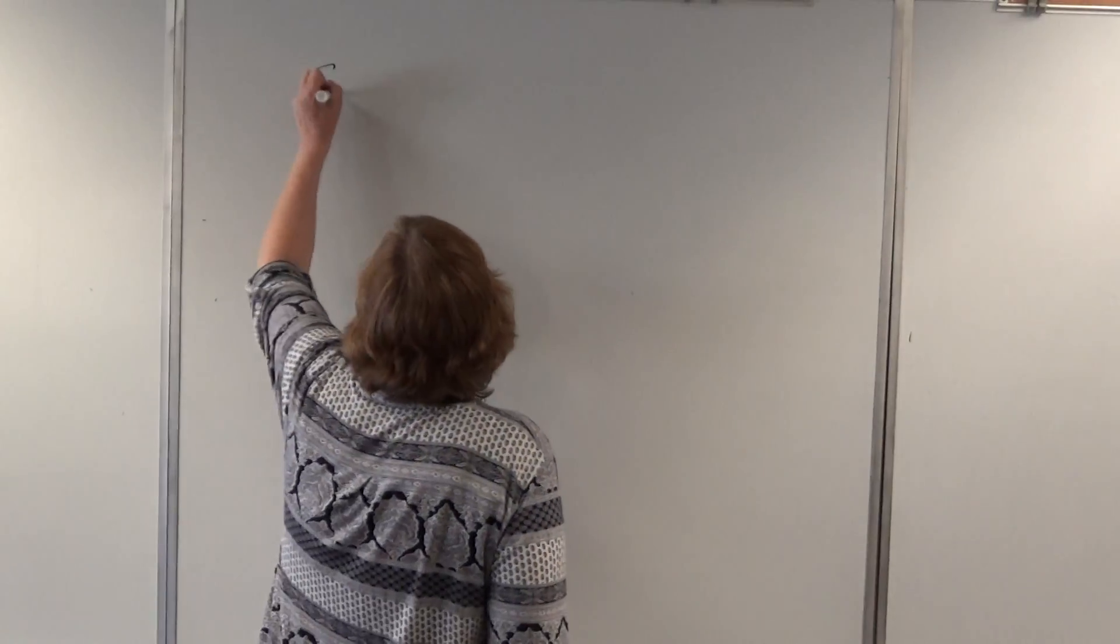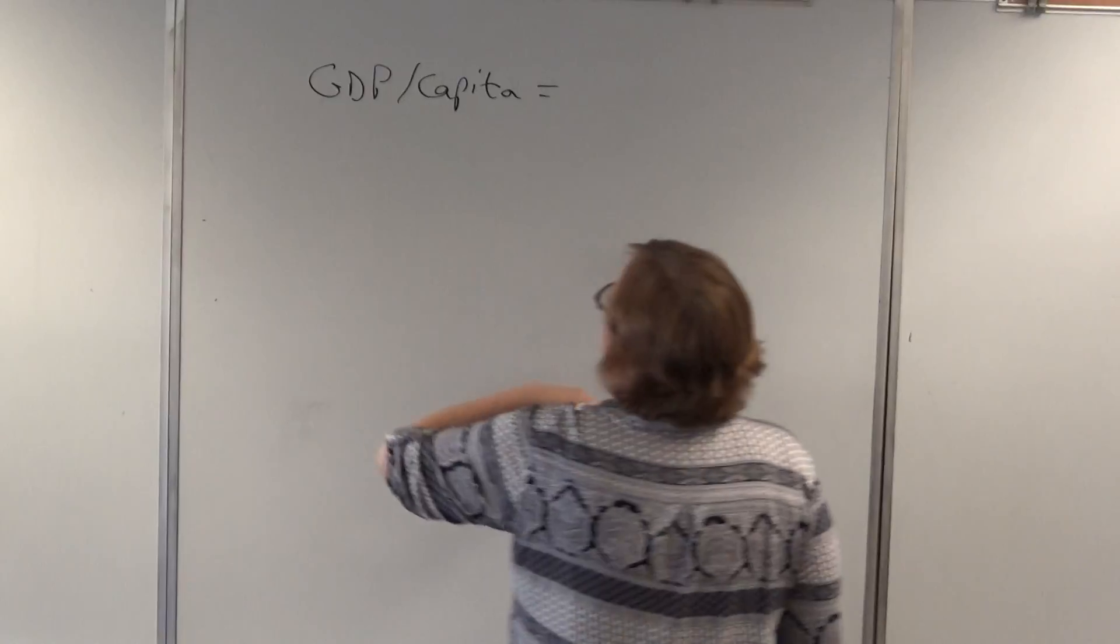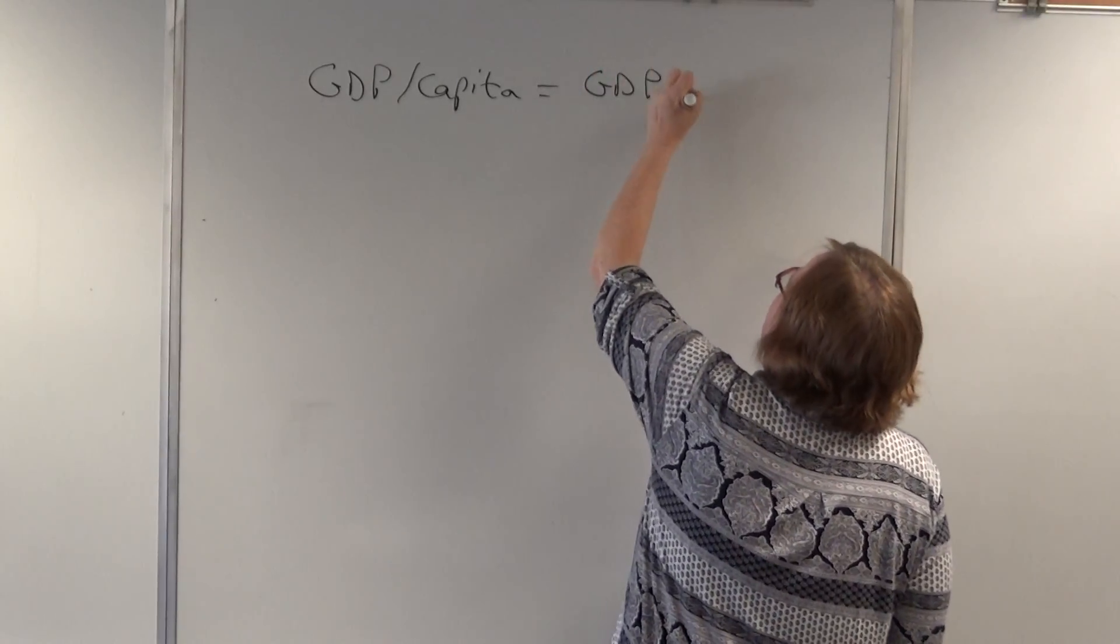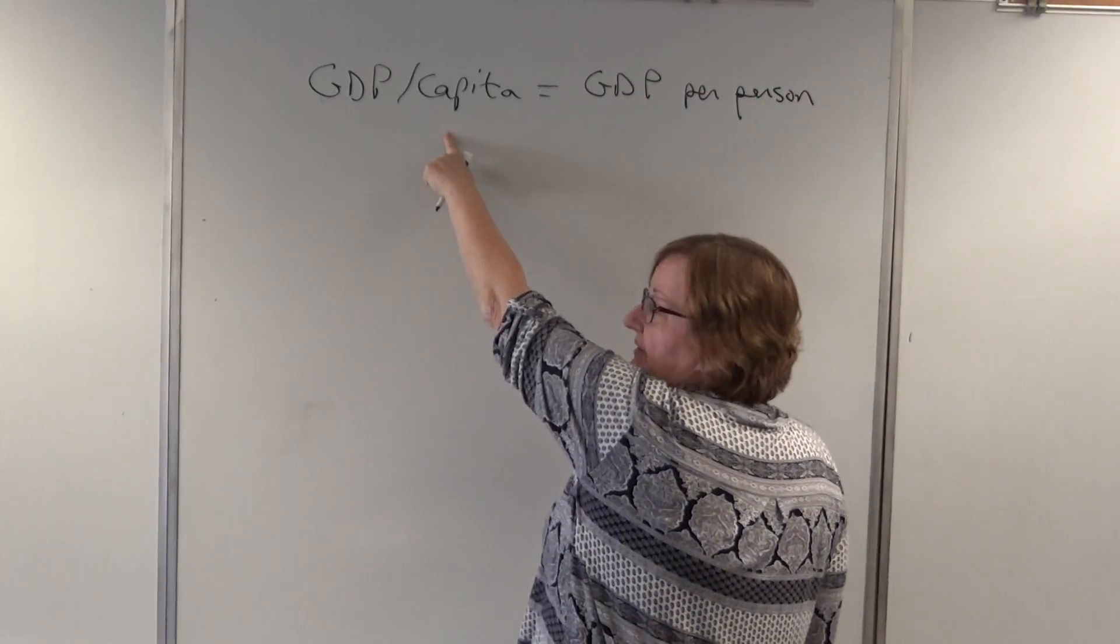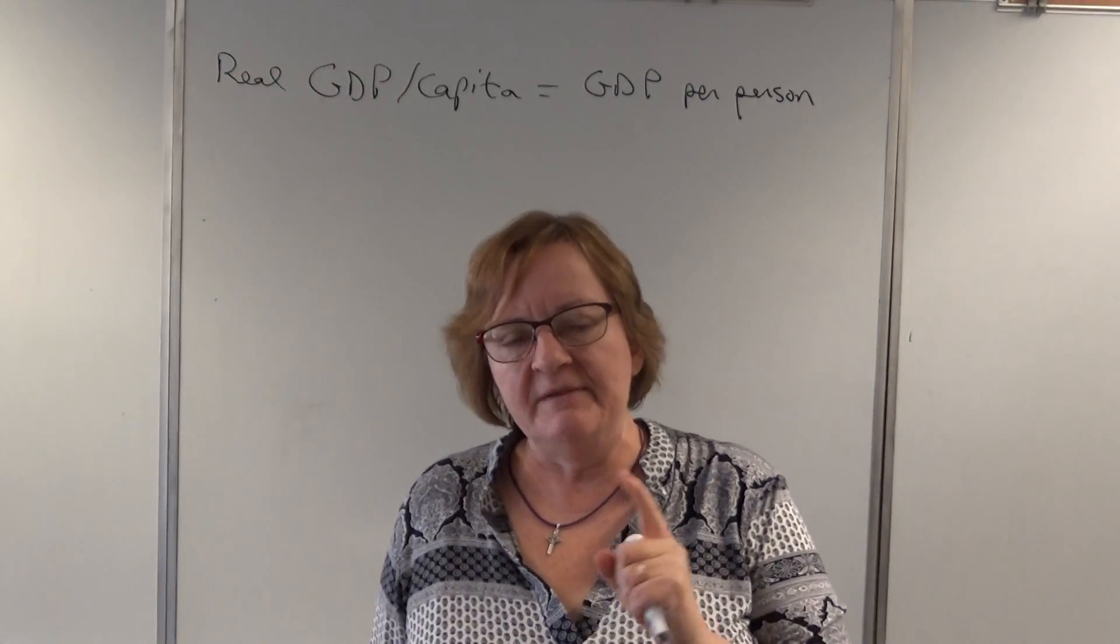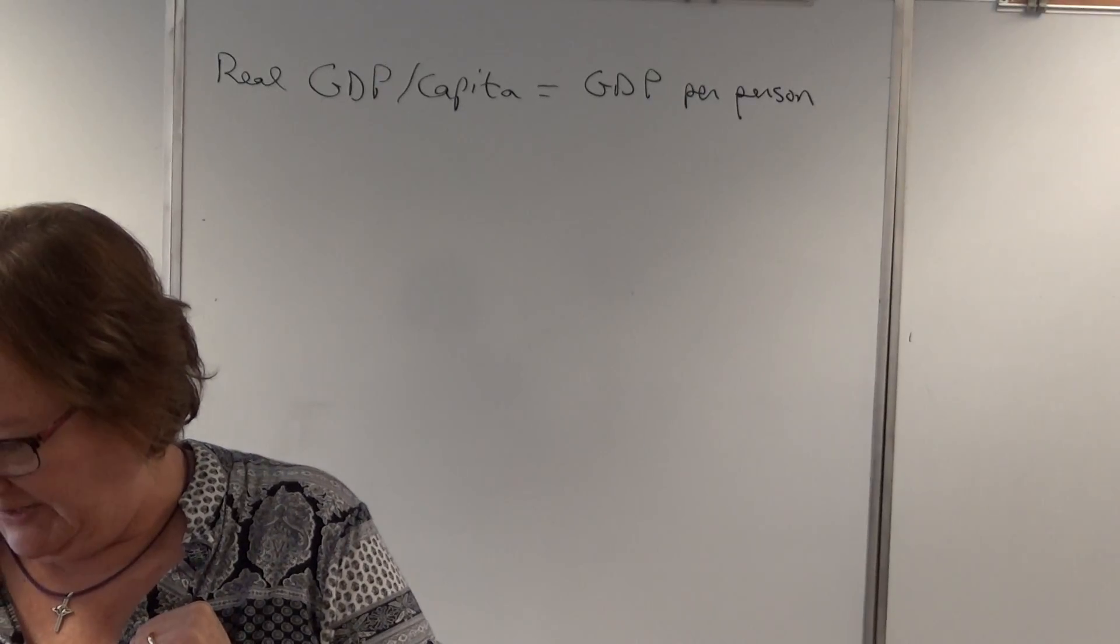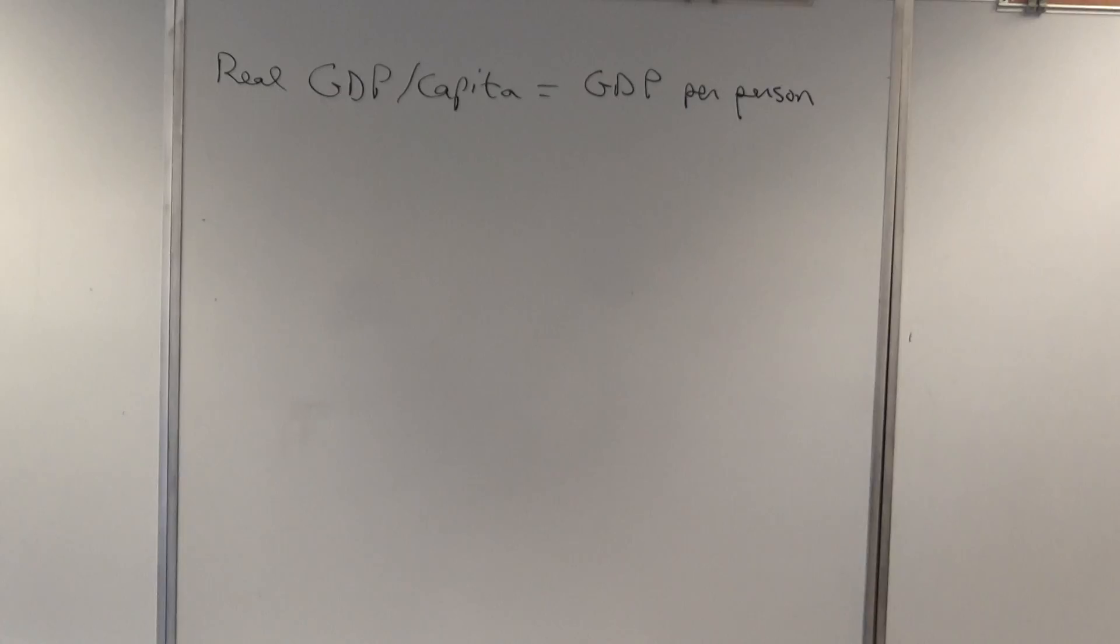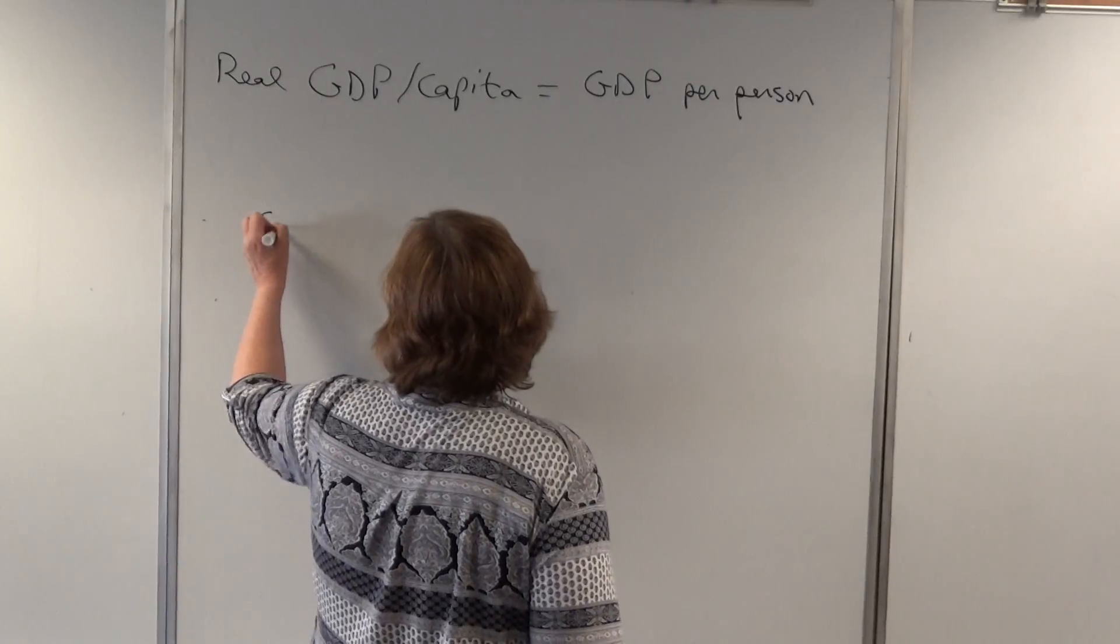There's something called GDP per capita, which is per person basically. This is the amount, this is what it means, this is what it's called. And you could say real GDP per capita. And that's a start. But even so, that money measure doesn't tell you a lot. Let's see.